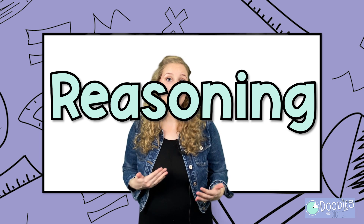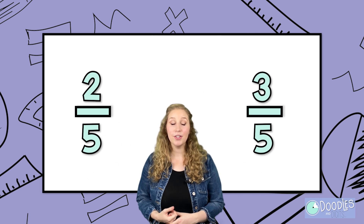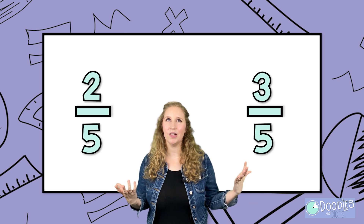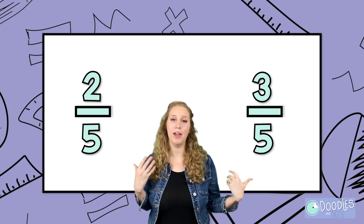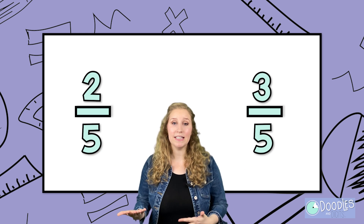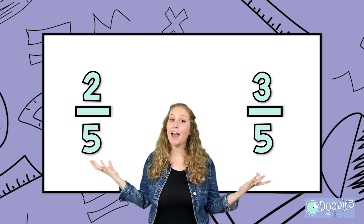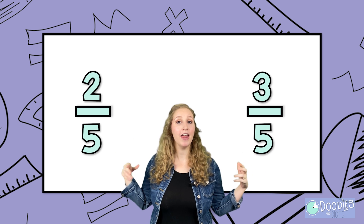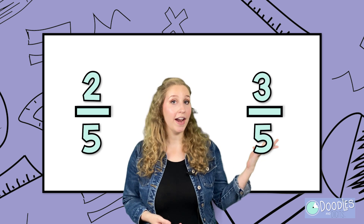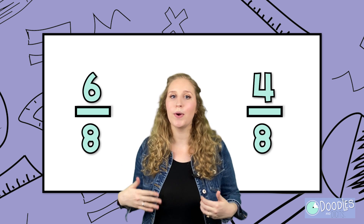The last strategy is you can also use reasoning to compare fractions. You can actually use benchmark fractions and just thinking through it to know which one's greater. For example, if we're looking at two fractions with the same denominator, we know it's the same size piece, so whichever one has more pieces is going to be greater. You've got two-fifths and three-fifths — they both have fifths in the denominator, so we can look at the numerator and know that three-fifths is greater. What about four-eighths and six-eighths? Since they have the same denominator, the larger numerator is going to be greater.